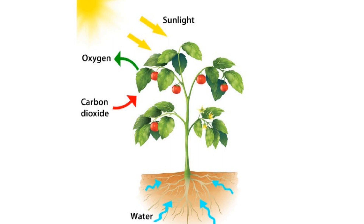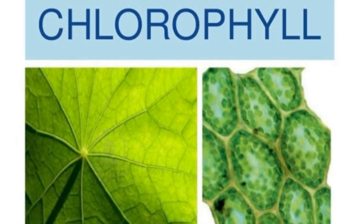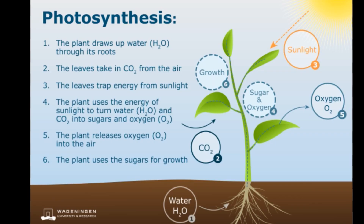Plants make food in their leaves. This process occurs when green plants absorb the energy of light from the sun and convert carbon dioxide and water into their food. The light energy from the sun is absorbed by the green color called chlorophyll present in the leaves. The carbon dioxide from the air is absorbed by the leaves, and water is absorbed by the roots from the soil and sent up to the leaves. While the leaves make the food, they give out oxygen into the air. This food is then used by plants to grow.